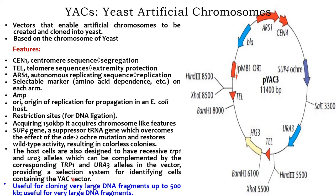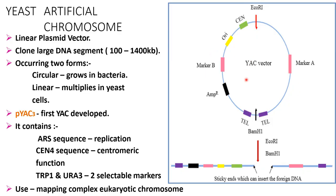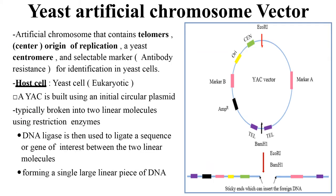YAC is useful for cloning very large DNA segments or fragments up to 500 KB. This yeast artificial chromosome vector is a linear plasmid vector that can clone large DNA segments up to 100 to 1400 KB. It occurs in two forms: circular, which grows in bacteria, and linear, which multiplies in the yeast cell. The first YAC developed contained an ARS sequence for replication, a CEN sequence for centromeric function, and TRP1 and URA3 as two selectable markers. It is used for mapping complex eukaryotic chromosomes.